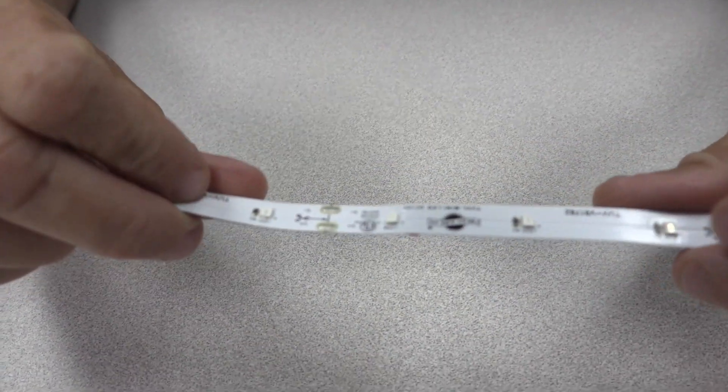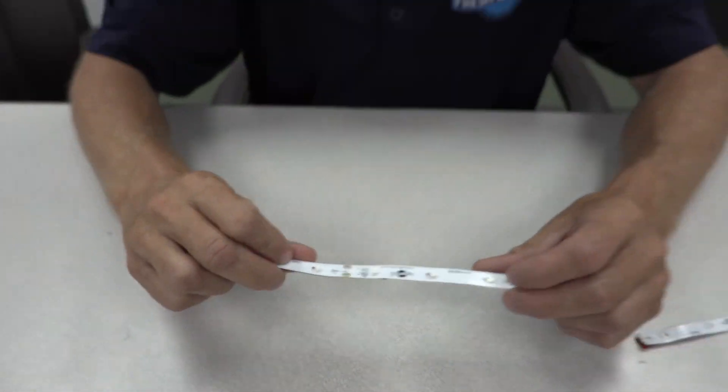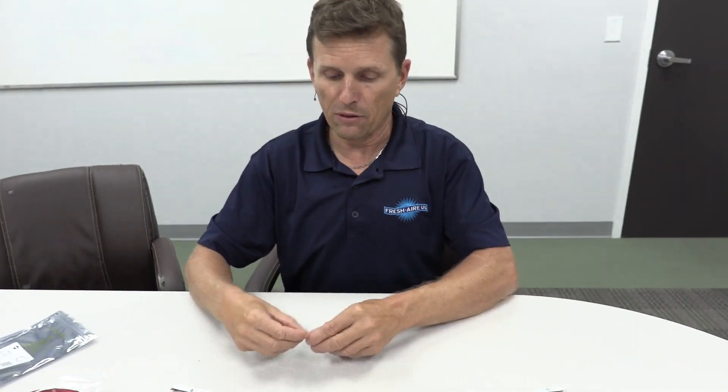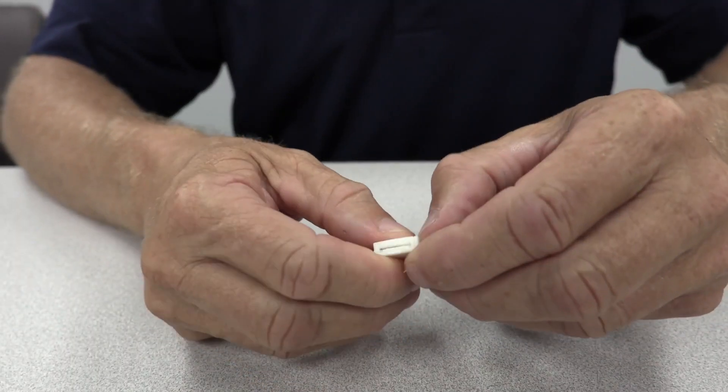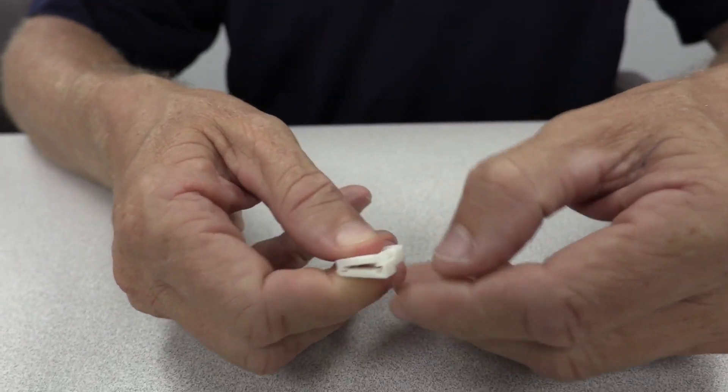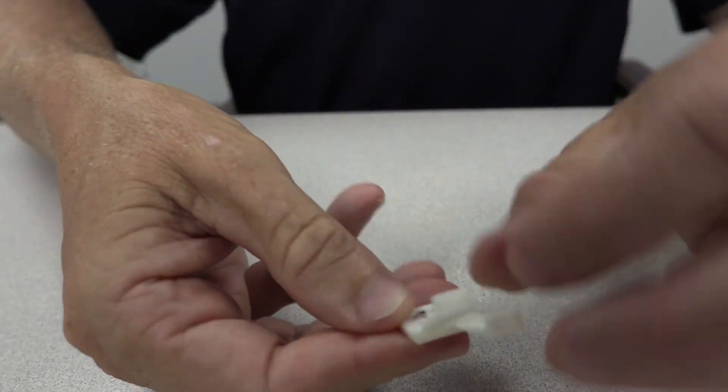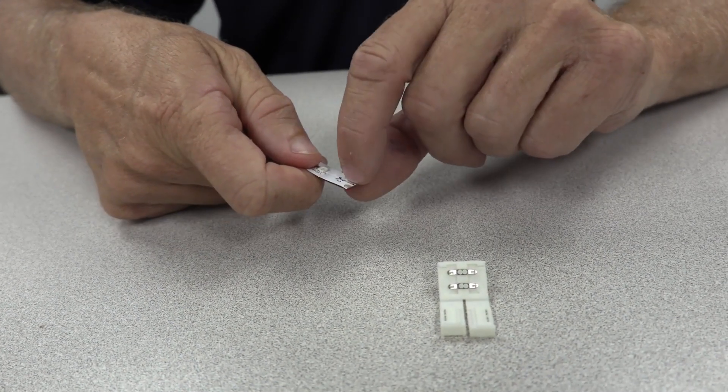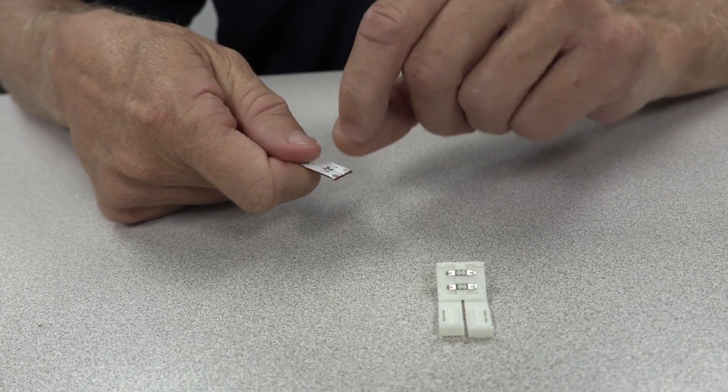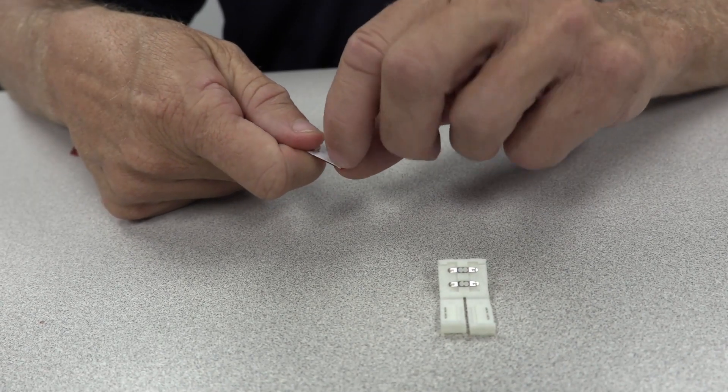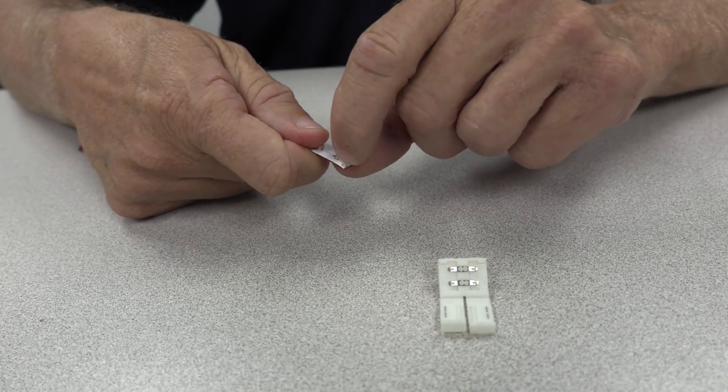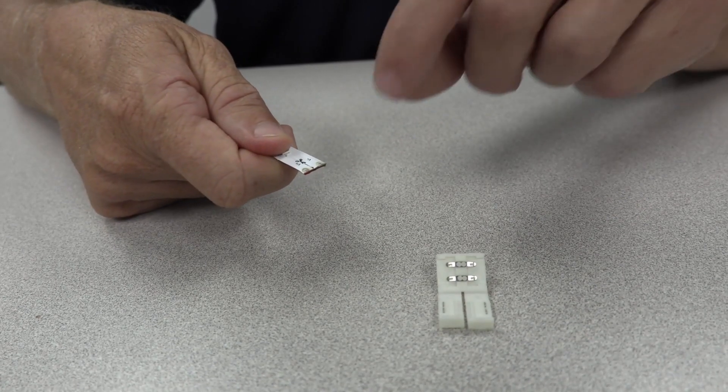So once you've already trimmed that to your desired length, you take the little coupler. At this point, we're going to open the coupler. You just take your fingernail and you just pop each door open. And then you're exposing each end. So you have to take this coating off the contact point. If you can just take a knife, a pair of scissors or something and just scrape it to where it's bare metal on top. It really doesn't take much to do so.